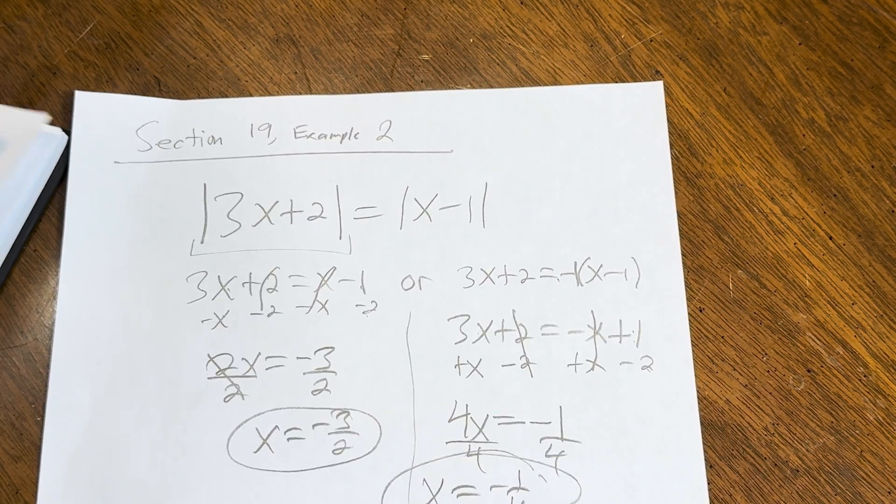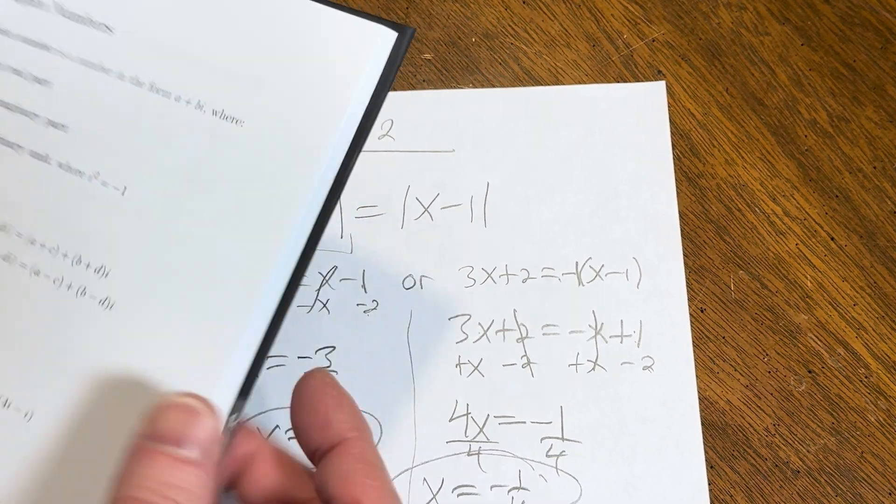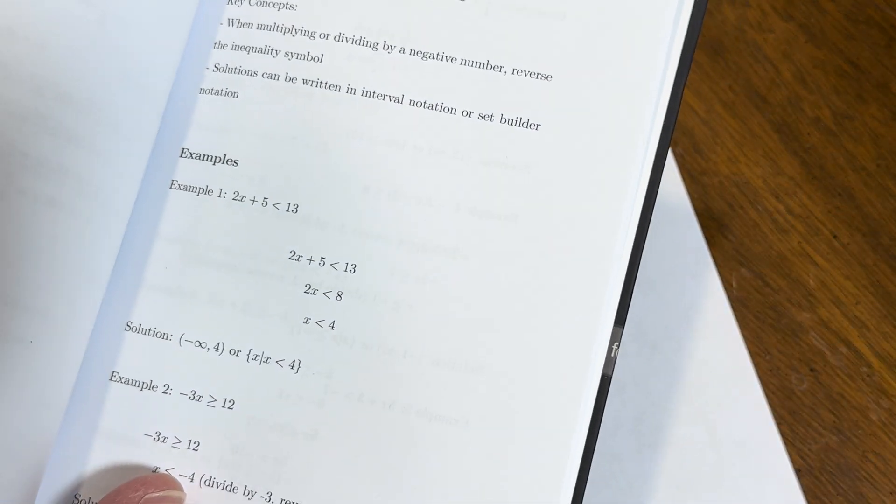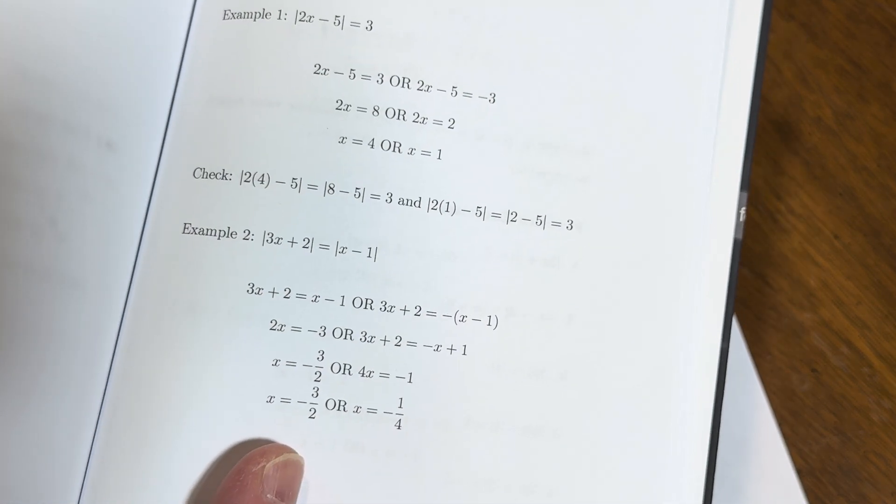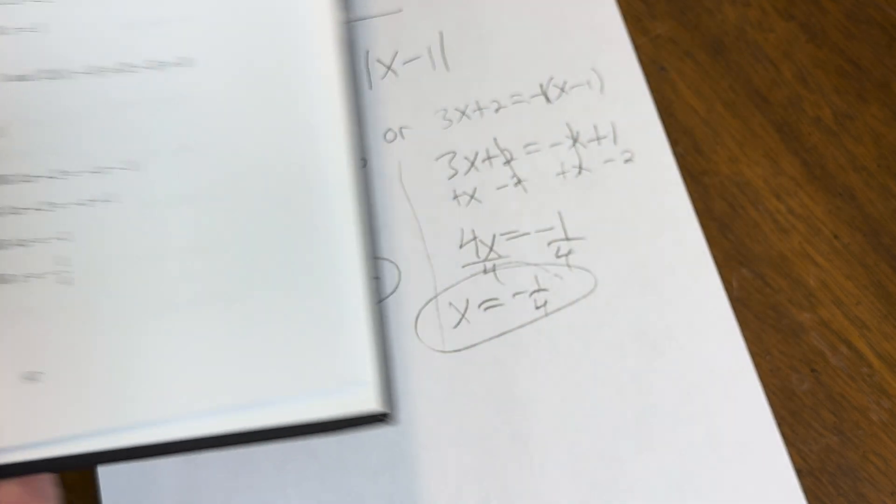Let's check to see if that's right, because we have the full solution here. So section 19, example 2. And it looks like it's negative 3 halves and negative 1 fourth, which is exactly what we have. So good stuff.